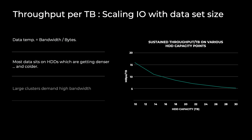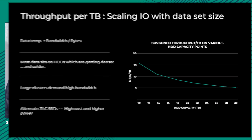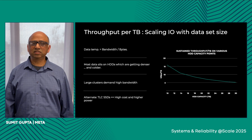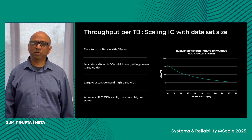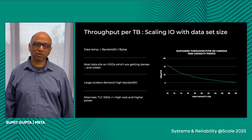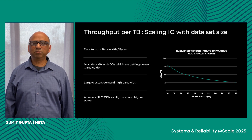We do need to build larger clusters, and these larger clusters demand very high bandwidth. The alternative is to use TLC SSDs for hotter data, but TLC SSDs cost a lot and at the same time consume much more power. So the two cost dynamics — dollar cost and power — are actually much worse with TLC SSDs.